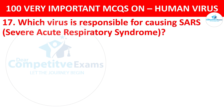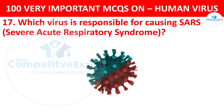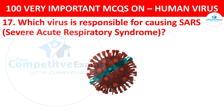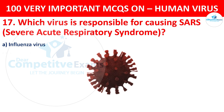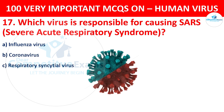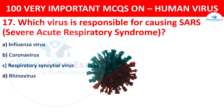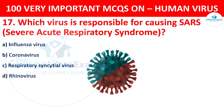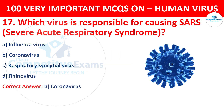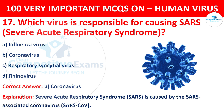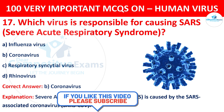Question 17. Which virus is responsible for causing SARS (Severe Acute Respiratory Syndrome)? Your options are influenza virus, coronavirus, Respiratory Syncytial virus, or rhinovirus. The correct answer is B, that is coronavirus. Severe Acute Respiratory Syndrome is caused by the SARS-associated coronavirus, SARS-CoV.